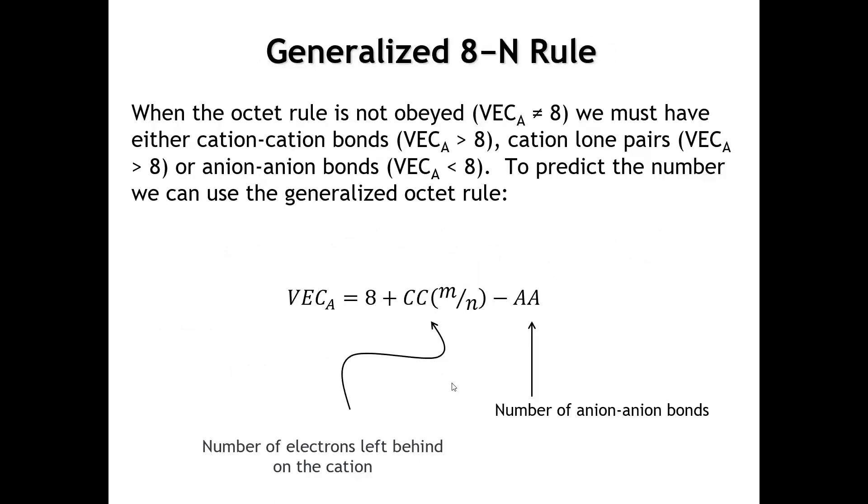Well, to answer that question, let's look at something called the generalized eight minus N rule. Sometimes it's called the generalized octet rule. With the formula we used on the last page, we can determine that in sodium-thallide, the valence electron count per anion is only four. What does that tell us? It tells us either that the anion has too many electrons or too few. In this case, four is less than eight, so it's too few. So, for the thallium to get to the octet rule, it's got to make bonds to other thallium atoms.